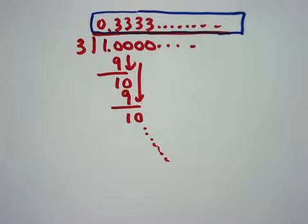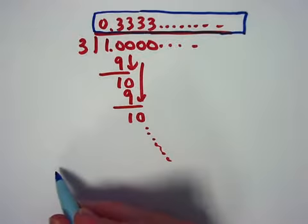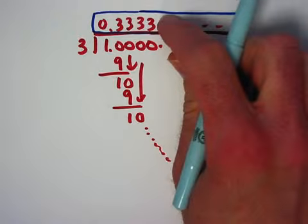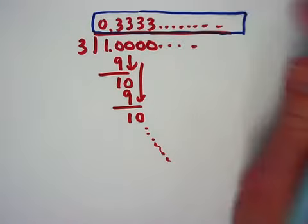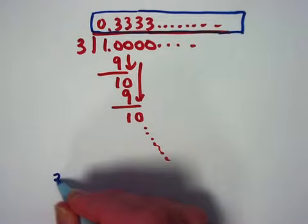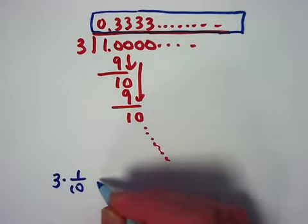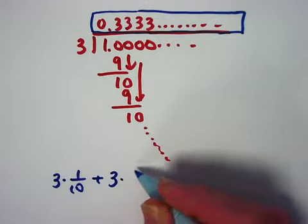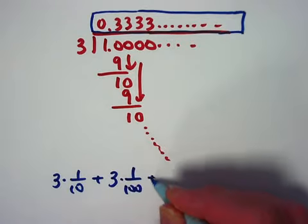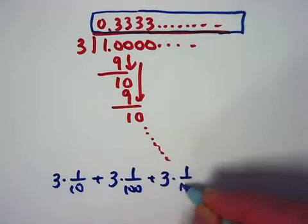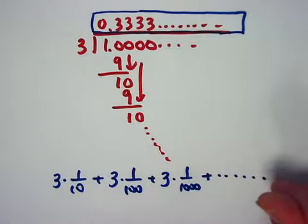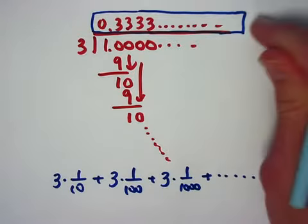How do you give meaning to that? A couple different ways you can do it. One way is to go back to the place value interpretation of these digits. 0.3 going on forever means you've got three in the tenth spot, three times one-tenth, plus three in the hundredth spot, so three times one over a hundred, plus three in the thousandth spot, so three times one over a thousand, et cetera, and that sum has to go on forever if these threes go on forever.